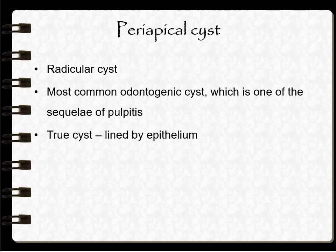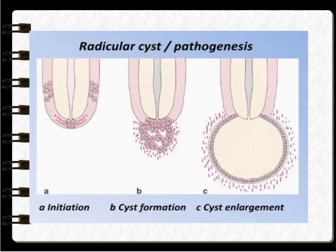Next is the periapical cyst, also called radicular cyst. It is the most common odontogenic cyst and is one of the sequelae of pulpitis. The periapical cyst is a true cyst lined by epithelium. Its pathogenesis involves three phases: phase of initiation, cyst formation, and cyst enlargement.